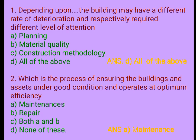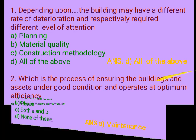Question 2. Which is the process of ensuring the building and assets are under good condition and operate at optimum efficiency? A. Maintenance, B. Repair, C. Both A and B, D. None of these. Answer: A. Maintenance.